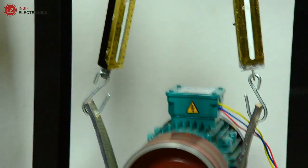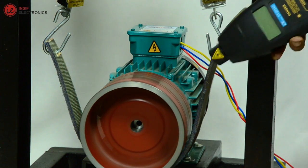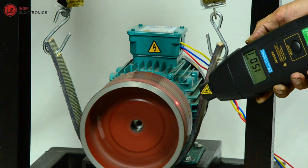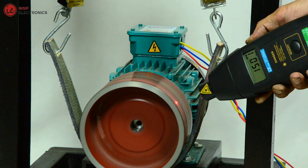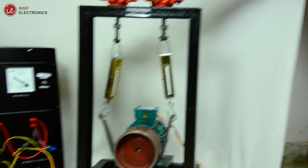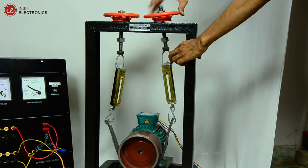Use tachometer to check RPM of motor and the tachometer shows 1501 RPM, the rated RPM is 1500. Now put some load on motor and take the readings and plot the graph.